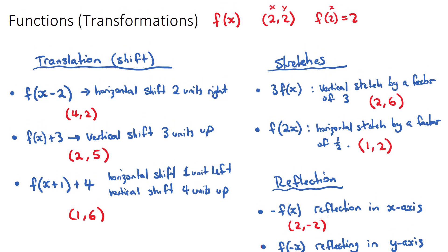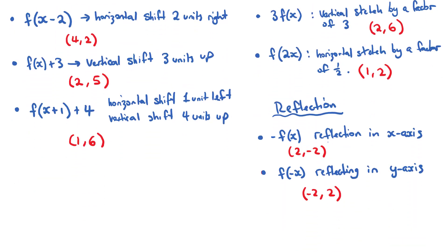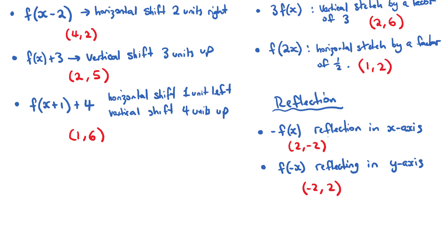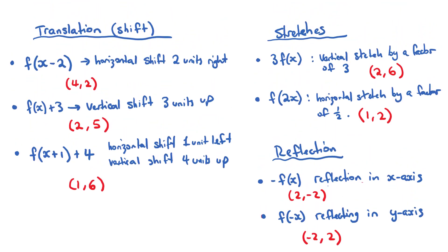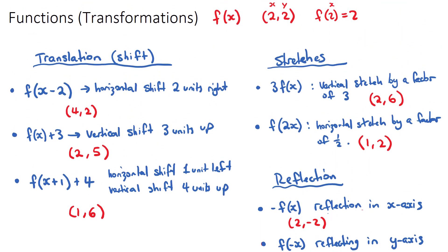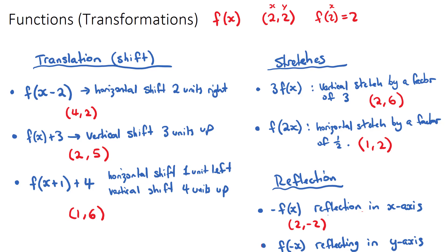To summarize: if you have x plus or minus inside the bracket, that's a horizontal shift — opposite direction to the sign. A plus or minus outside the bracket is a vertical shift. A coefficient outside the function is a vertical stretch, and inside is a horizontal stretch by one over that number. The two reflections are either in the x-axis using -f(x) or in the y-axis using f(-x). Try some exam questions and good luck!